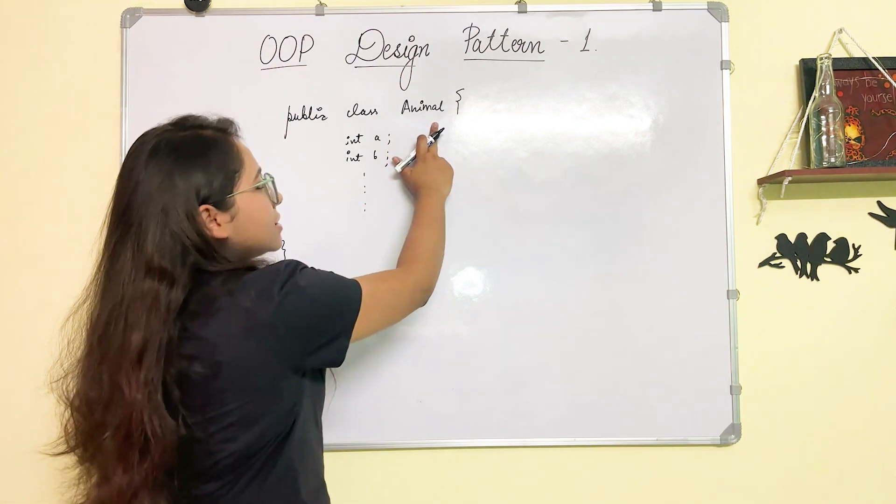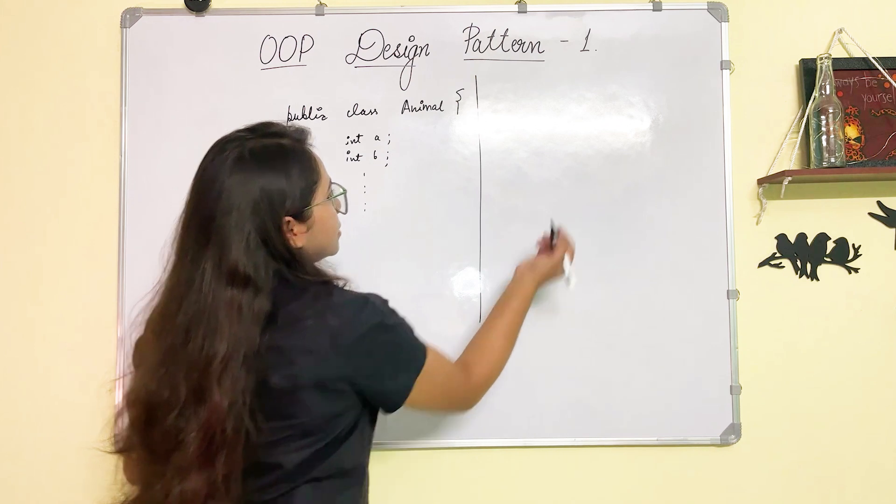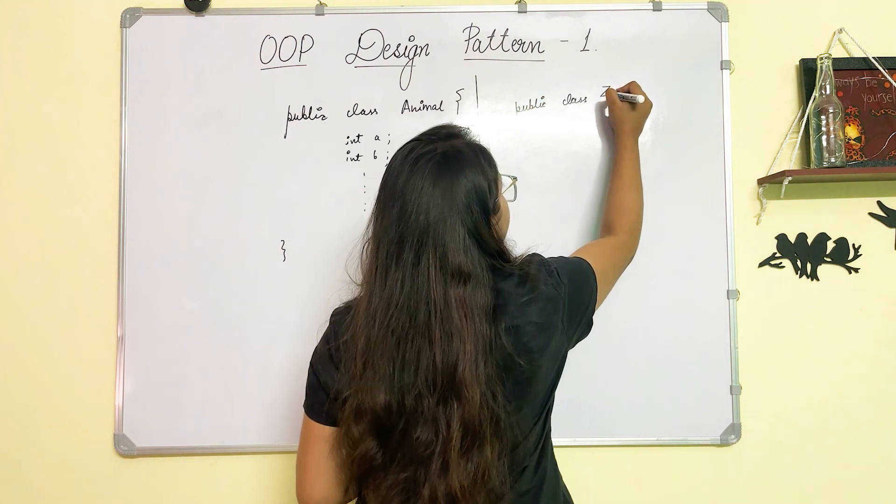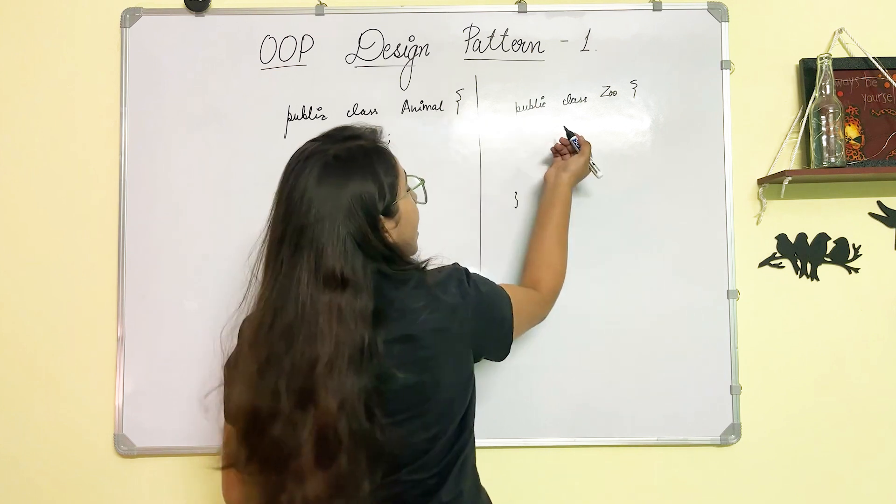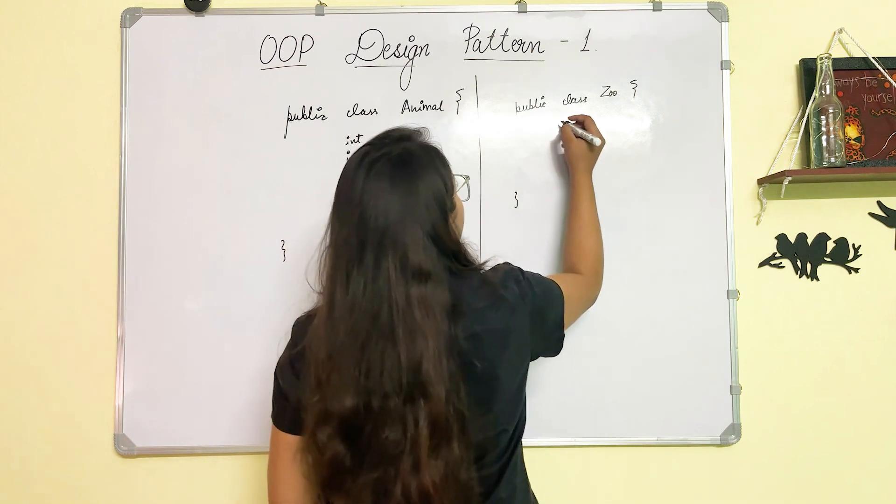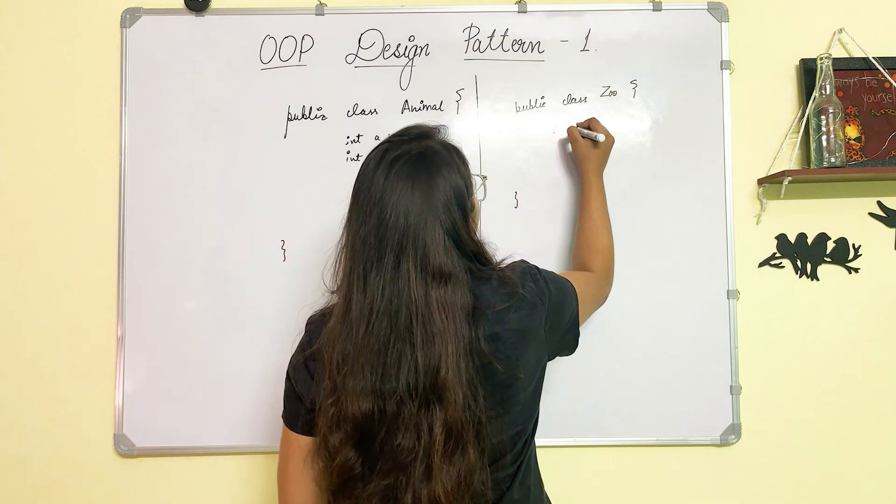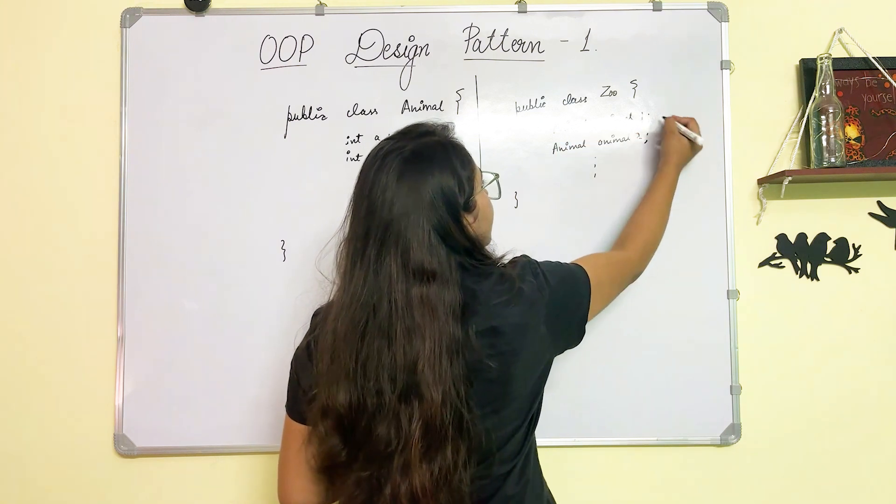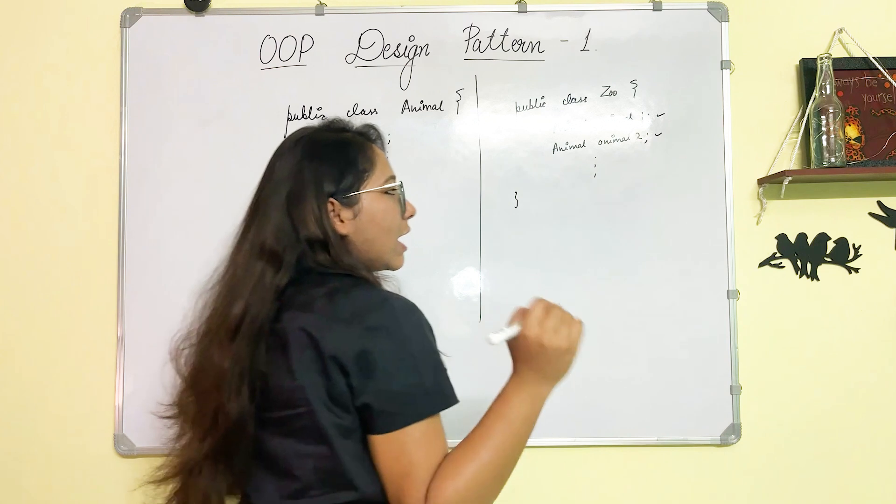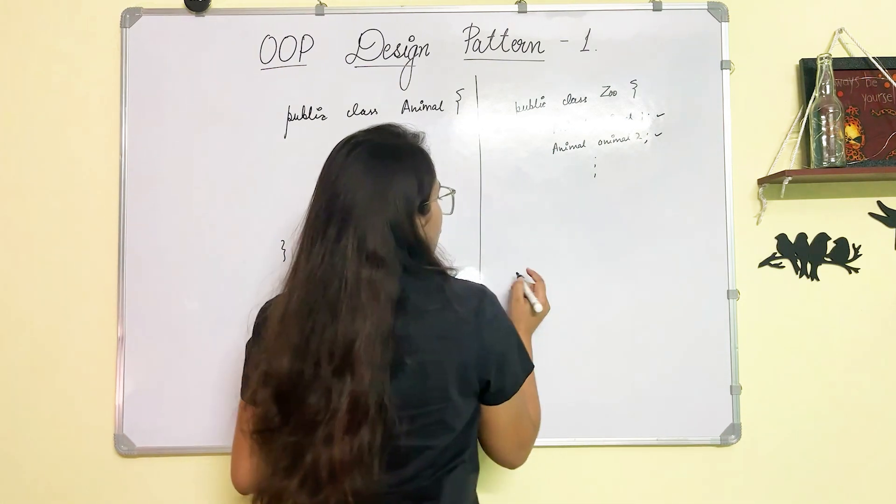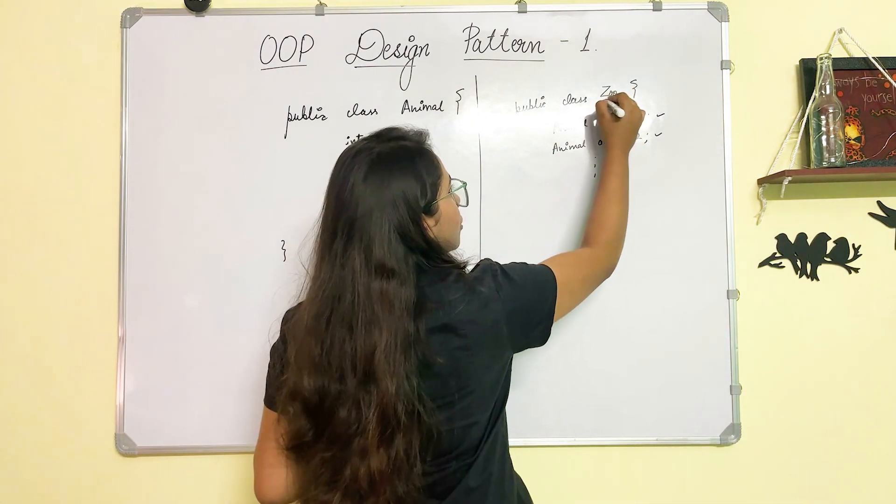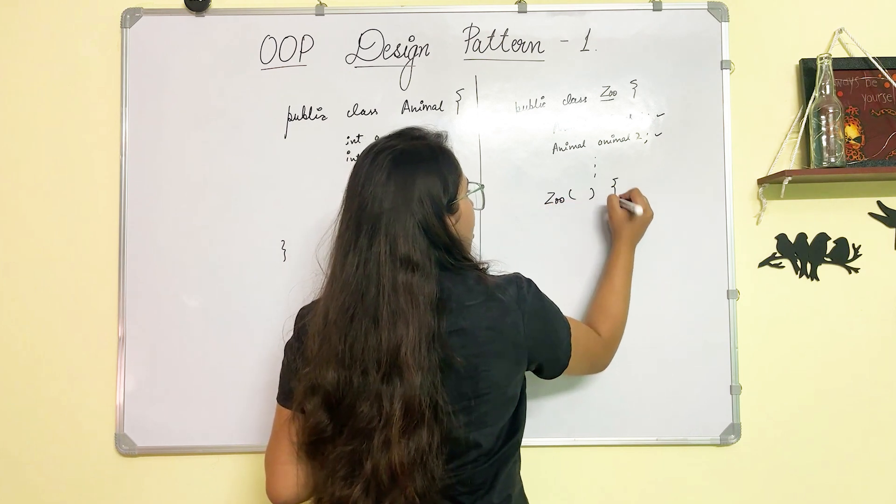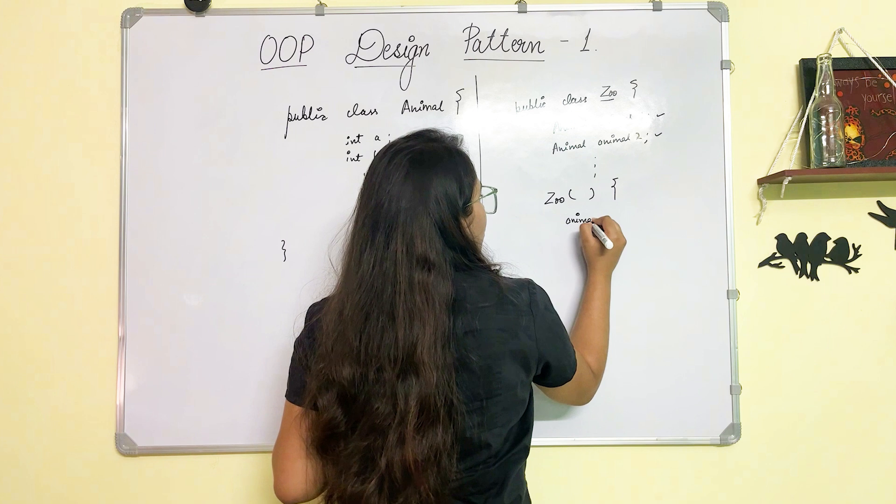Now let's say this Animal class is used in another class. I'm defining another class, let's say Zoo. Now in this class, you might have a lot of animals, right? So let's say I'm defining animal1, similarly you are going to have animal2 and so on. And to initialize all these animal class members, you are going to call new Animal in the constructor of Zoo class. So you are going to have a constructor for the Zoo class and let's say you will initialize animal1, something like this,